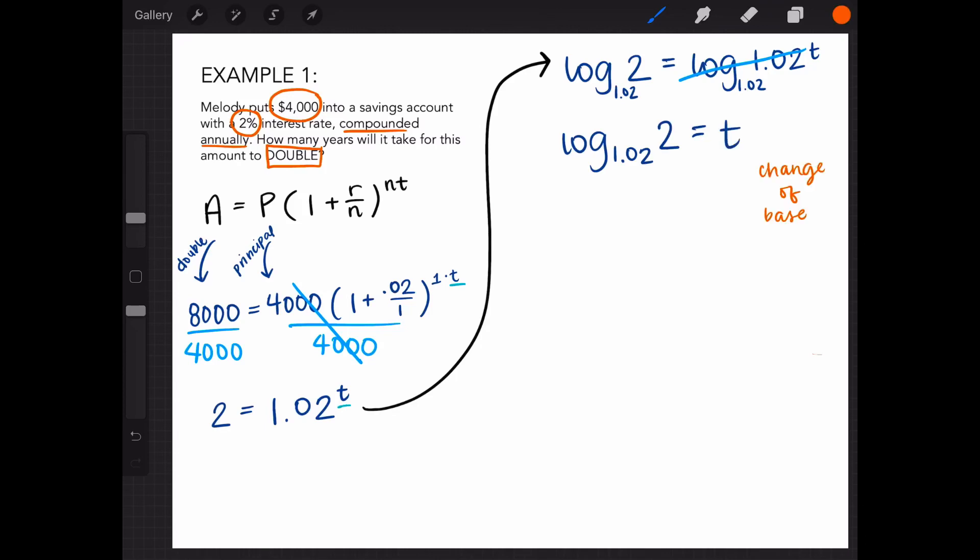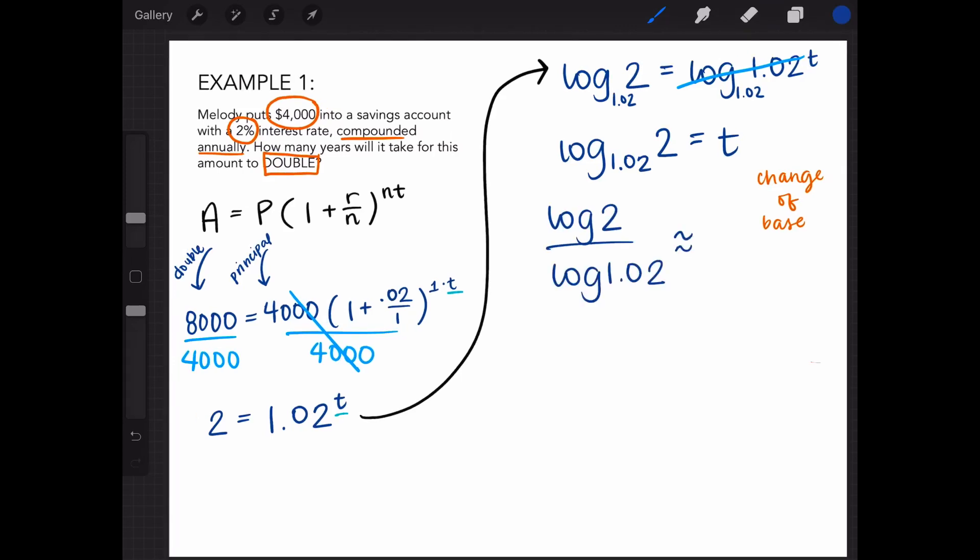Next, according to the change of base formula, log base 1.02 of 2 is equivalent to log 2 divided by log 1.02. After typing this into a calculator, we can round our answer to the nearest whole number to get 35. This means that it will take about 35 years for the money in Melody's savings account to double.